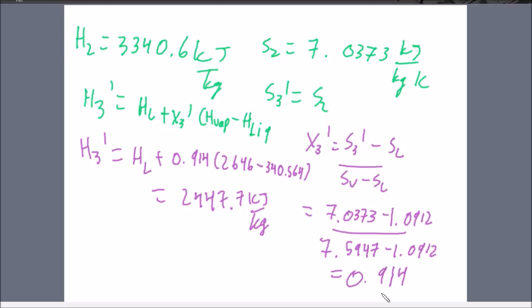Moving on from that, we take our 0.914, we plug it into our equation here to find H3' and we're going to get 0.914 times 2646. That was also found in the back of the book on the previous slide I had up, minus 340.564, which is found on the previous slide. And HL should be positive 340.564. You do the math, plug it all in, and you'll get 2,447.7 kJ per kg.